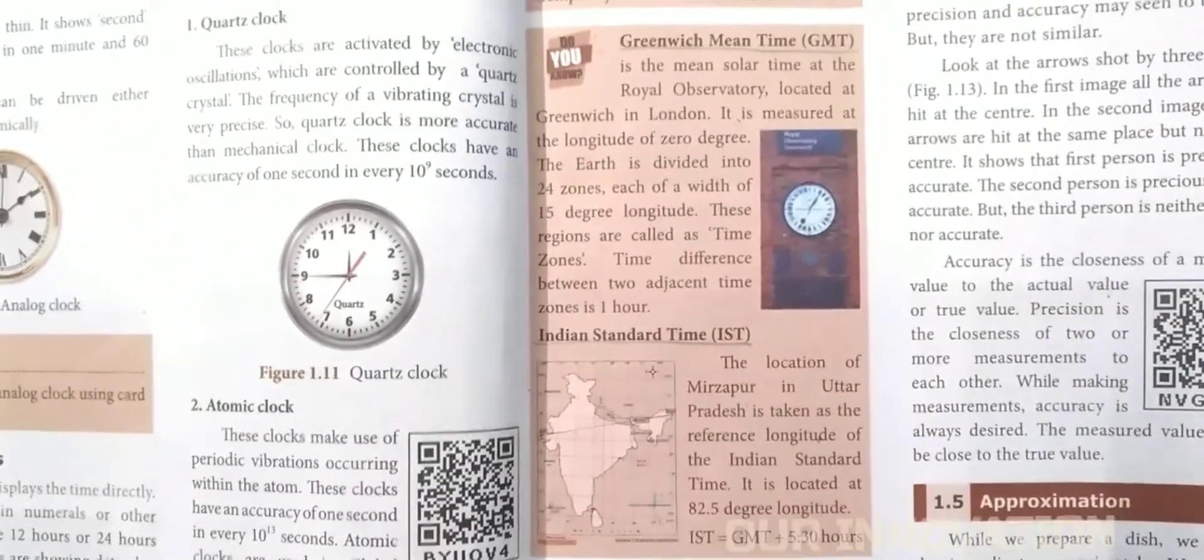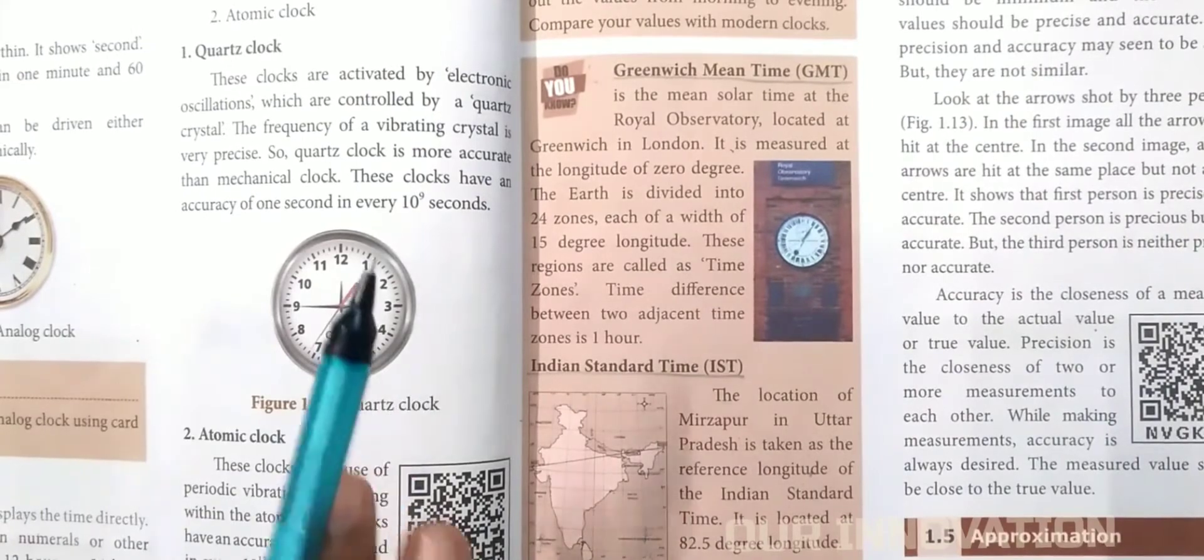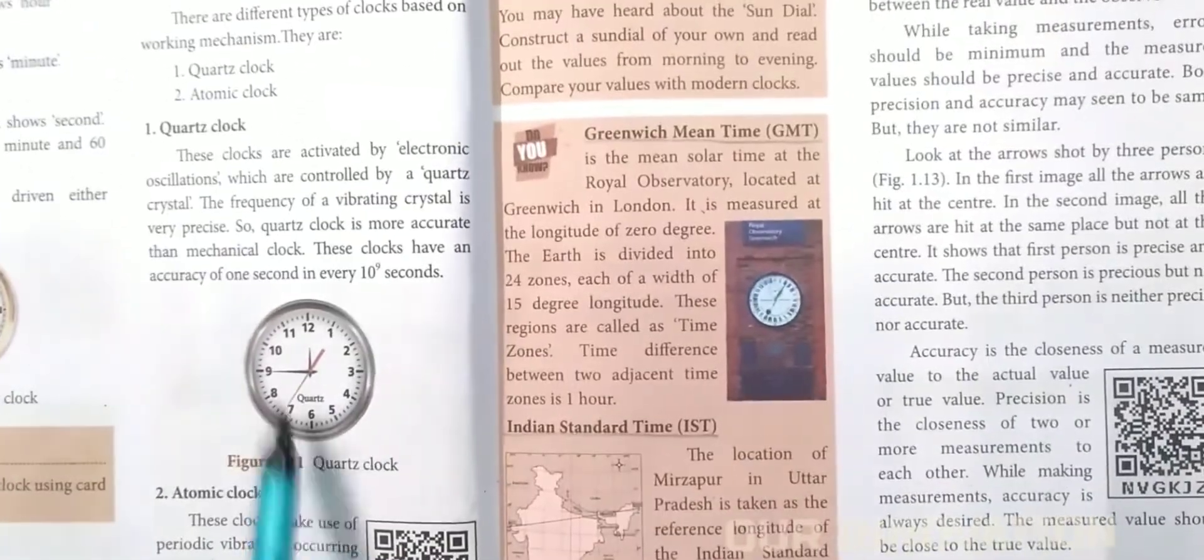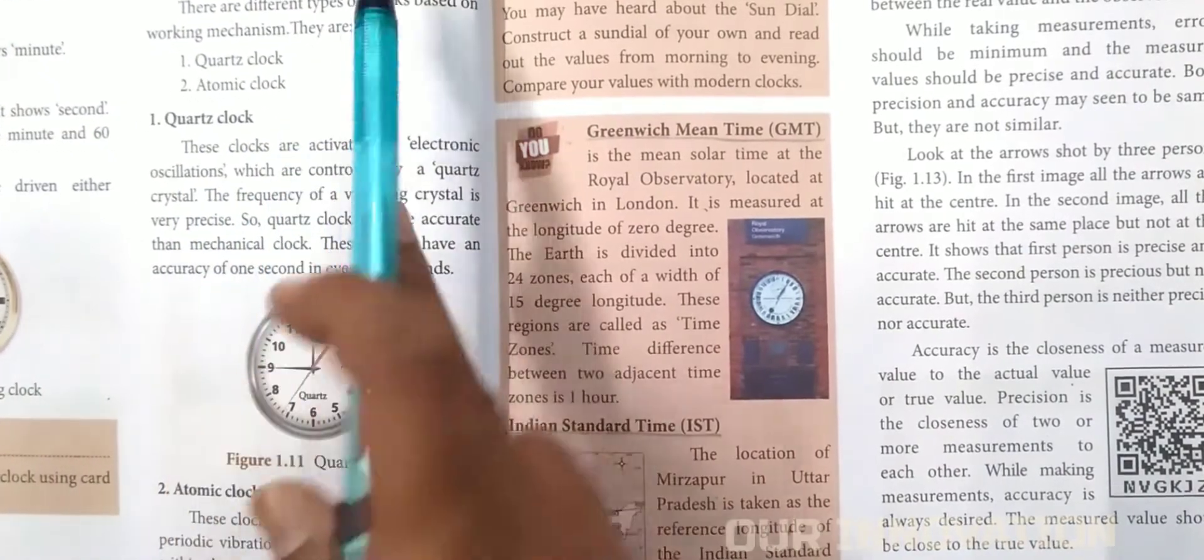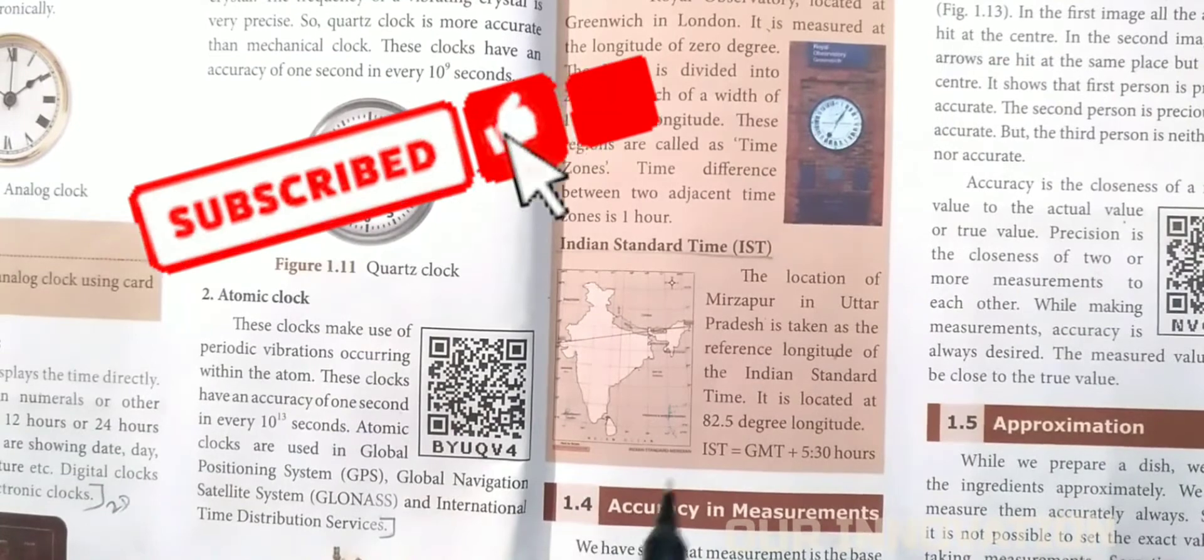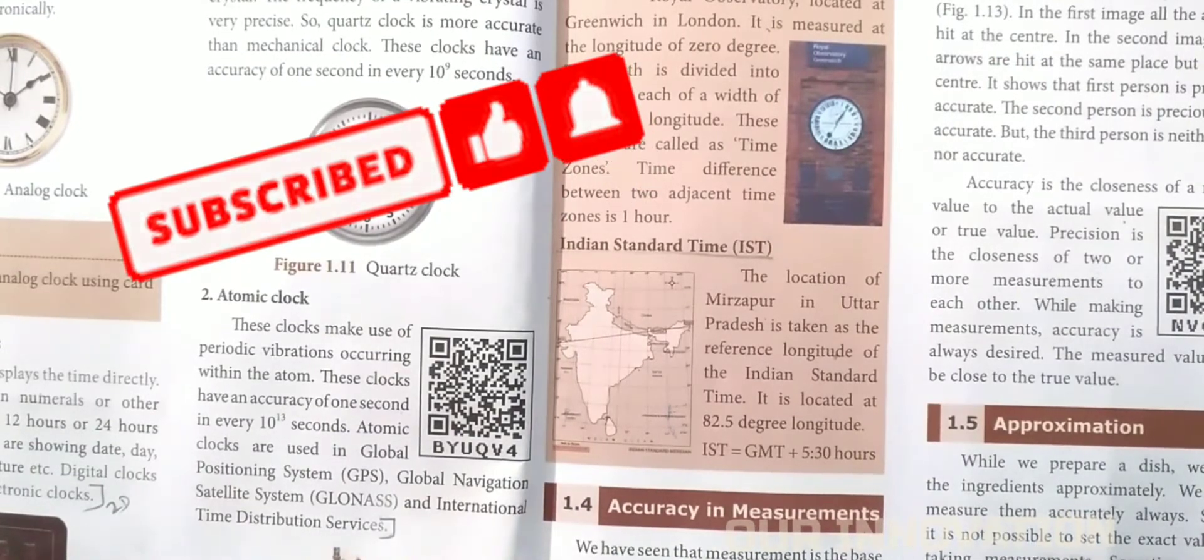Working mechanism - types of clock based on working mechanism: quartz clock system and atomic clock system. You need to write these points about working mechanism.